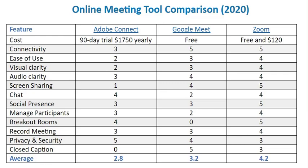In terms of connectivity, if you have a weak connection — if you're in a rural area or you just don't have a very fast internet connection — Adobe Connect will give you problems in terms of video and audio delay. Google Meet is pretty good and so is Zoom in terms of connectivity, so if you have a weak connection, those would be the tools you'd want to use. In terms of ease of use, Adobe Connect has a fairly steep learning curve relative to Google Meet and Zoom.